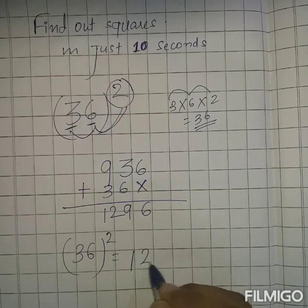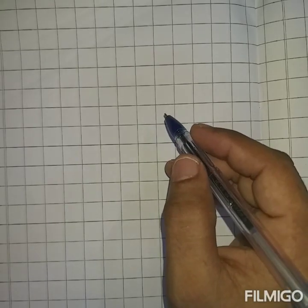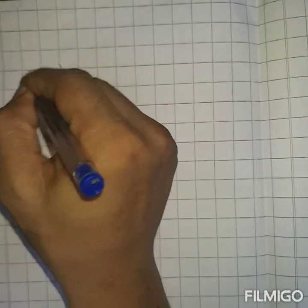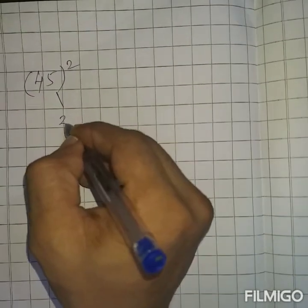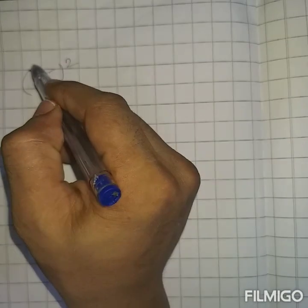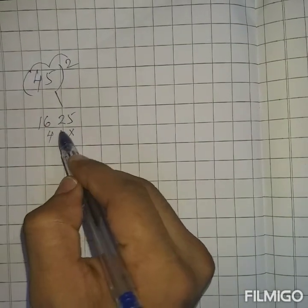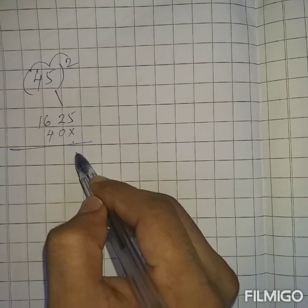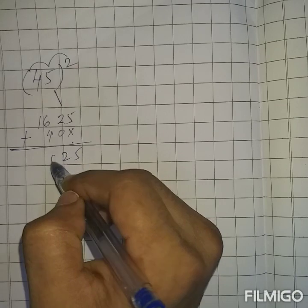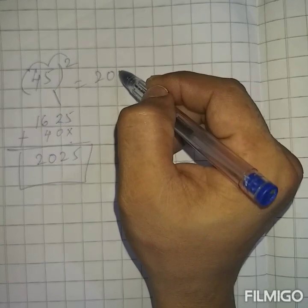Let us solve one more example. Let's go for 45. Square of 45. So simply write the square of 5: 25. Square of 4: 16. The multiplication 4 × 5 = 20, 20 × 2 = 40. So leave one place and 40. 5, 2 + 0 = 2, 6 + 4 = 10, 1 carry. So the answer for 45 is 2025.